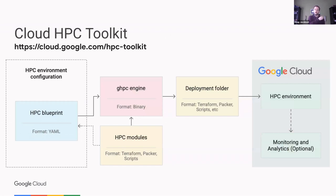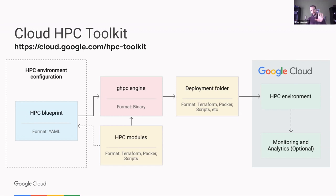Google Cloud HPC Toolkit is an open source tool — the link is on GitHub. It is an engine for taking a YAML description of infrastructure you want to create in Google Cloud and deploying it for you. It makes reproducible environments very easy — you can give the YAML file to somebody else who has HPC Toolkit and they can deploy the exact same infrastructure in their GCP environment. It takes a YAML blueprint, runs it through an engine that reads Terraform, Packer, and Scripts modules, pieces them into a deployment folder, and then you run Terraform commands to deploy it.